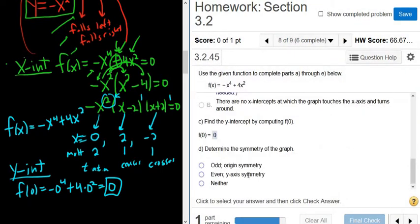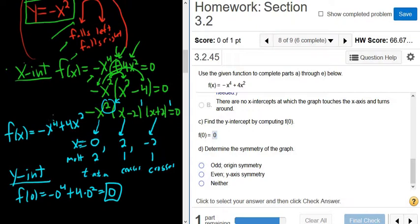Determine the symmetry of the graph. So even, odd, or neither. So we can look at the exponents. All of the exponents are even. So if you recall, when they're all even, the answer is even. So we have y-axis symmetry in this problem.